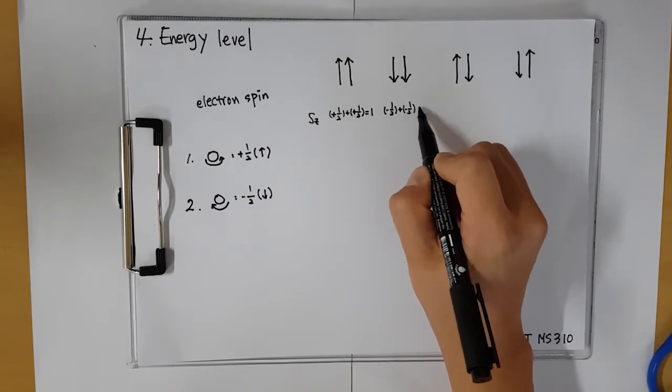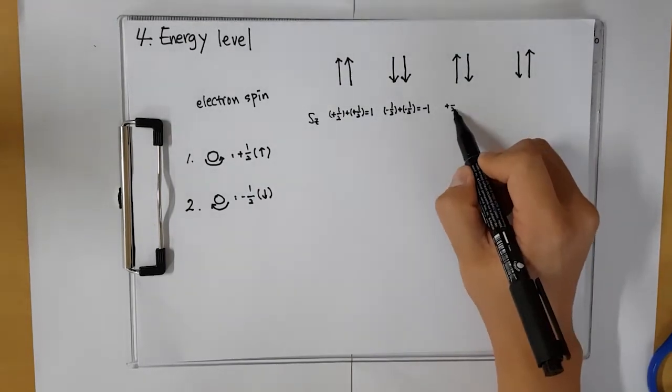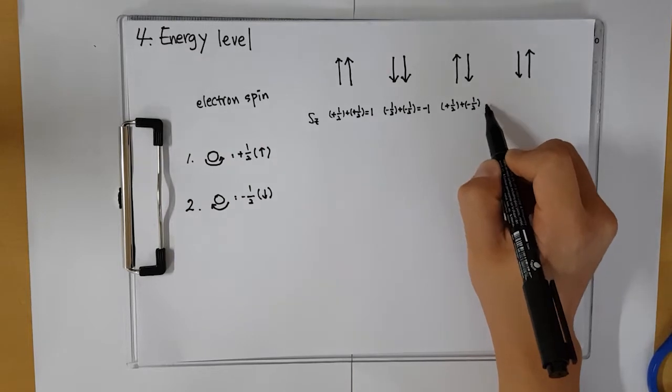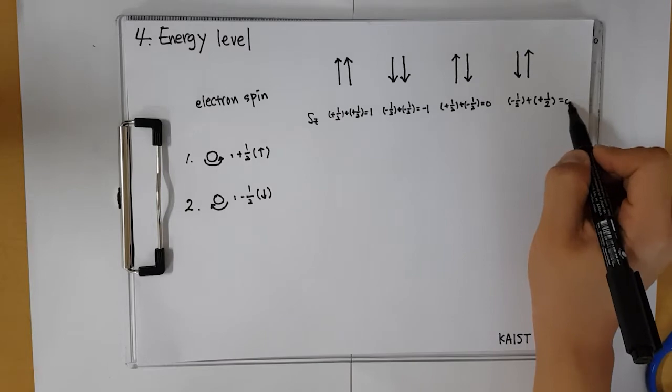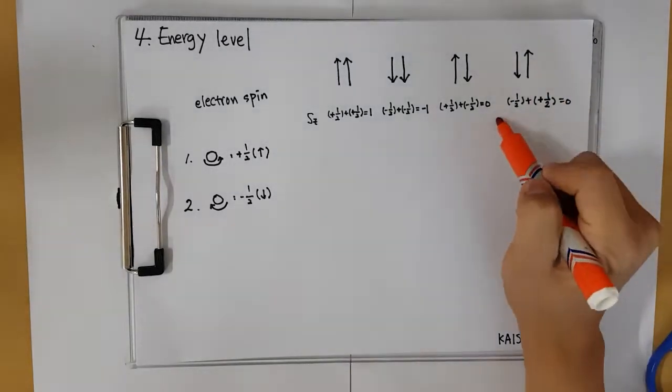In the last cases, two electron spin directions are anti-parallel, so the spin z components are zero.